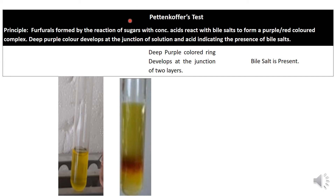The second test is Pettenkofer's test. The principle is that furfurals are formed by the reaction of sugar with concentrated acid, and these react with bile salts to form a purple-red colored complex. A deep purple color develops at the junction of the two liquids. To perform the test, add sucrose and concentrated H₂SO₄ slowly to the side of the test tube containing the sample, and a purple ring will form at the junction, indicating the presence of bile salts.